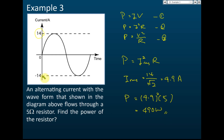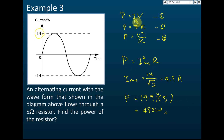Note: the peak value of 14 could be positive or negative — either gives the same result since you square it. To find power in AC circuits, always use root mean square current and root mean square voltage. Resistance stays the same — there is no root mean square resistance; 5 ohm is just 5 ohm.